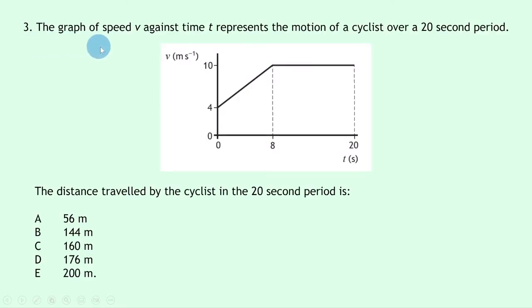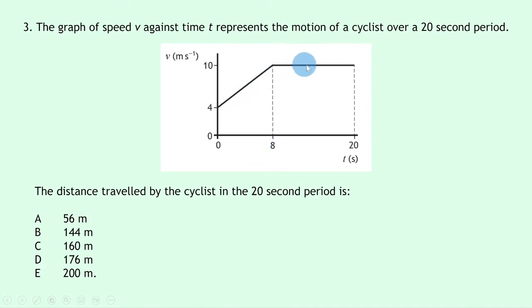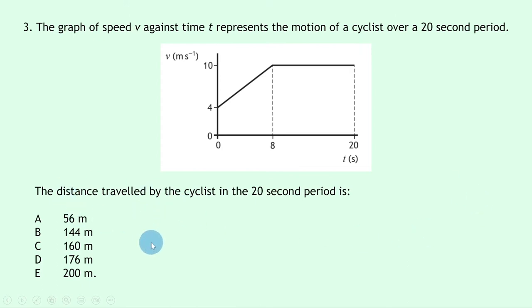Question 3 shows a speed-time graph for a cyclist over 20 seconds. Speed starts at 4 metres per second, increases to 10 over 8 seconds, then remains constant until 20 seconds. We need the distance travelled in the 20-second period. To find distance from a speed-time graph, we calculate the area under the graph.